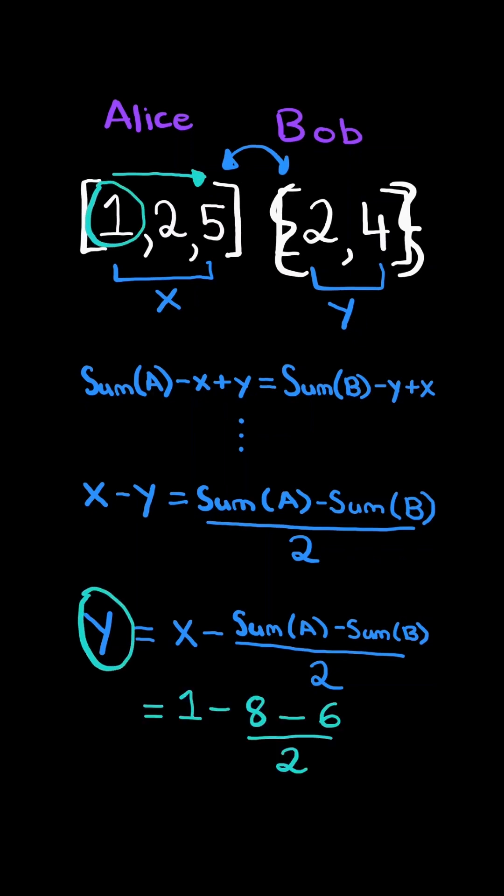In this case, X is 1, the sum of A is 8, and the sum of B is 6. This results in 0. And we check if 0 is in Bob's set. In this case, it's not.